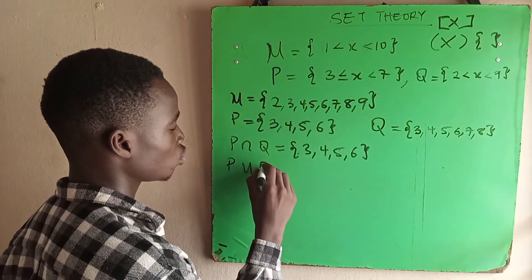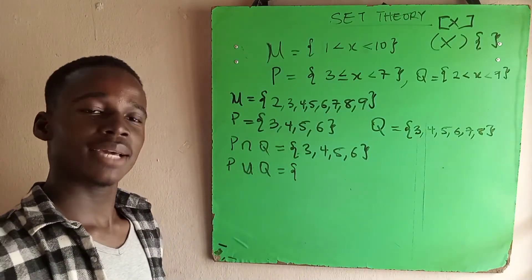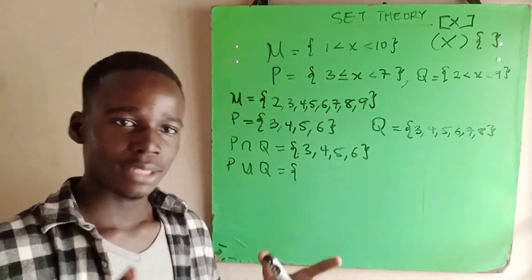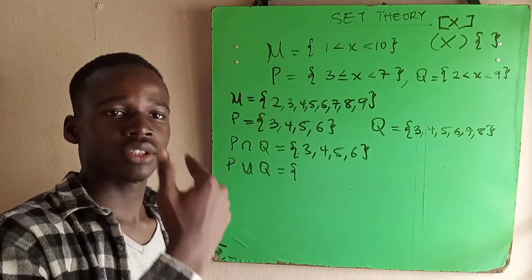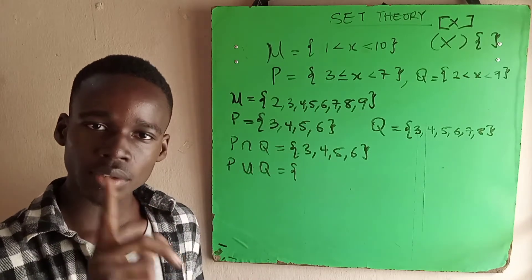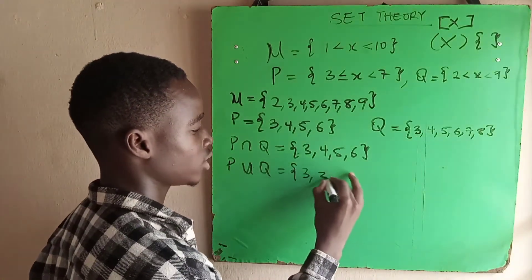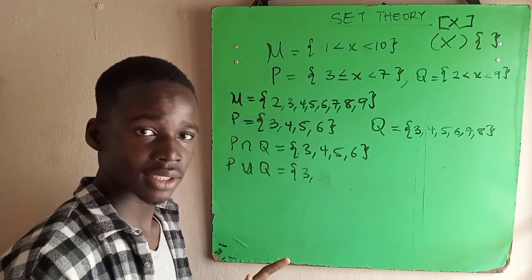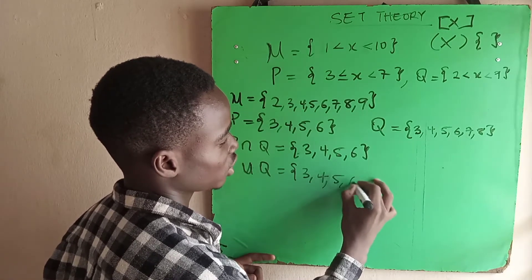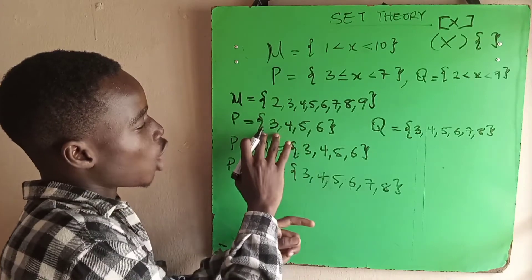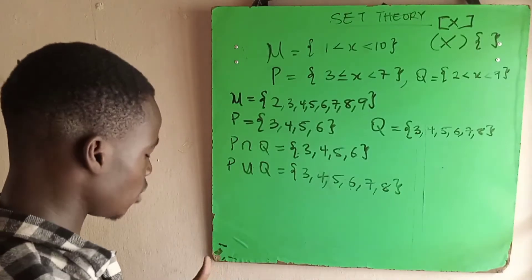The next is P union Q. What this means is you carry all the elements in P and take all the elements in Q and put them in one set. What you need to be mindful of is if you find two elements that are the same in P and Q, you just take one of the elements. We have 3 in P, so we just put one 3. We have 4, 5, 6, 7 and 8. You want to find every element in P and every element in Q in this set.